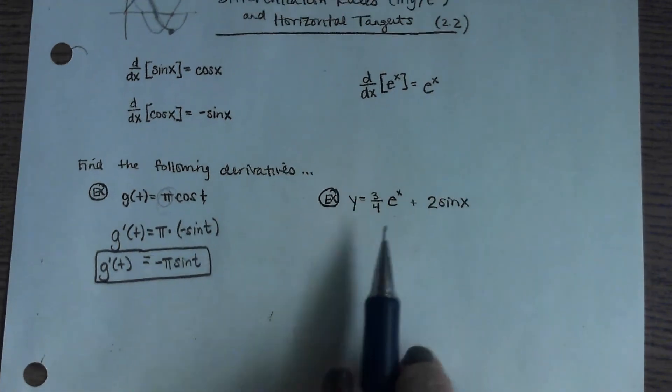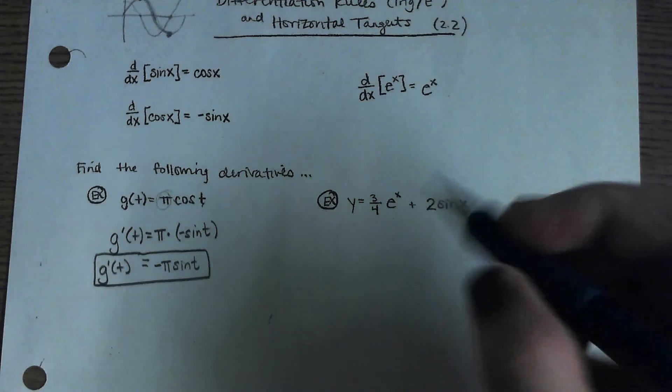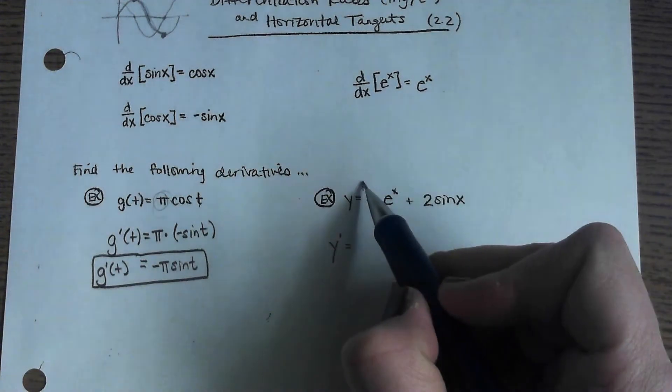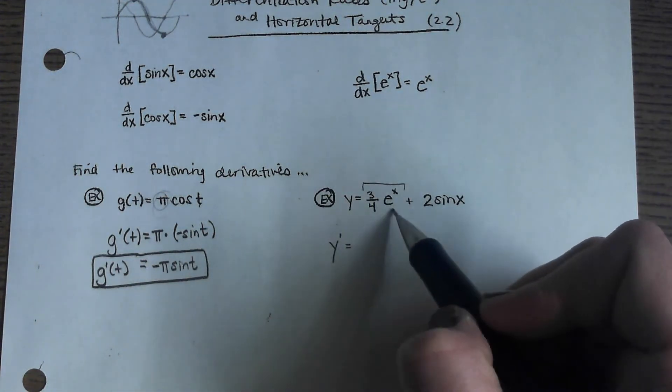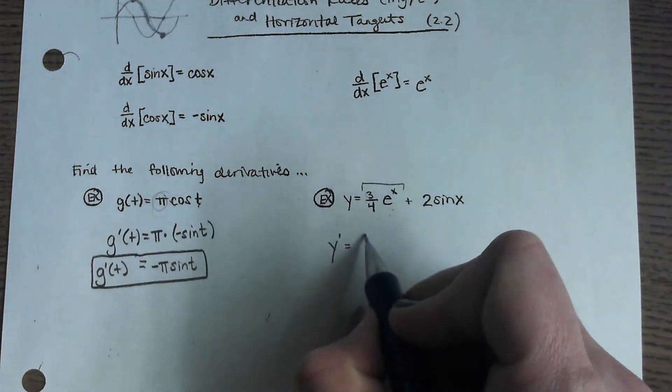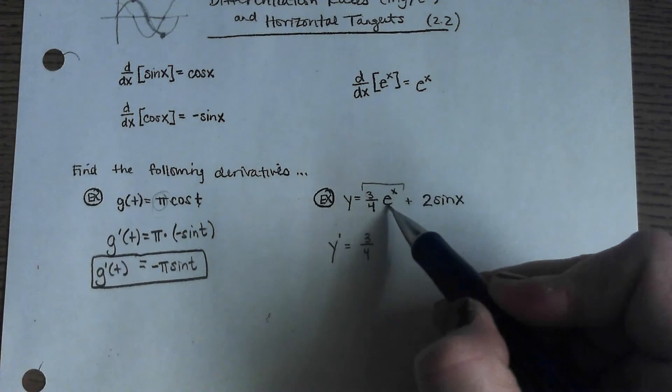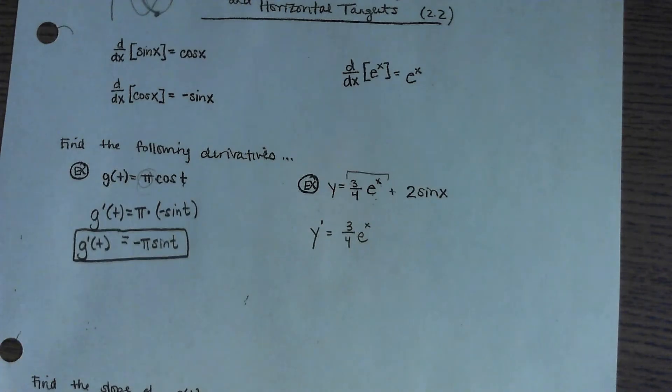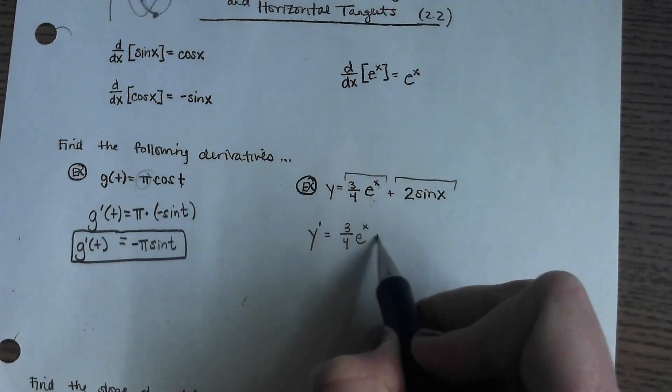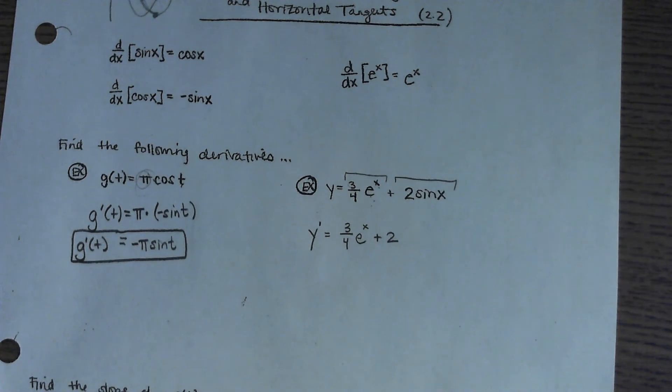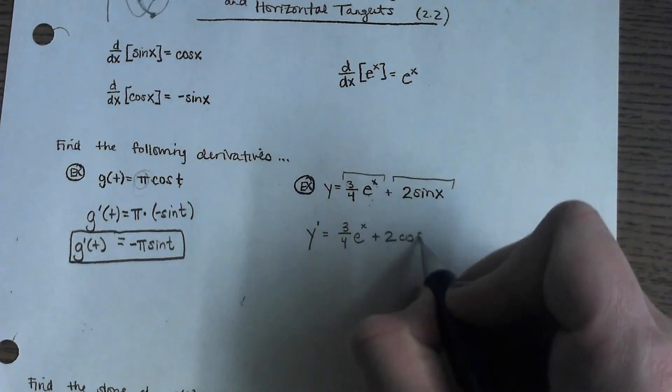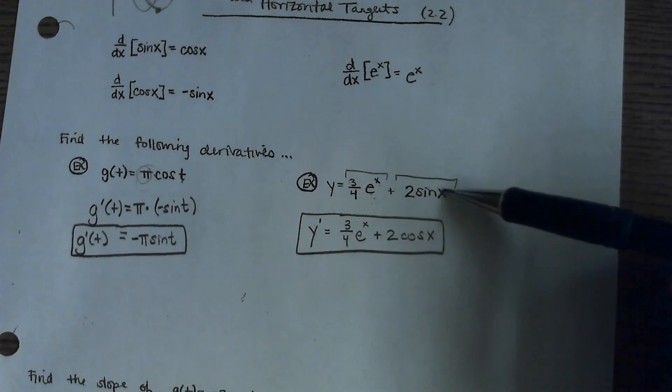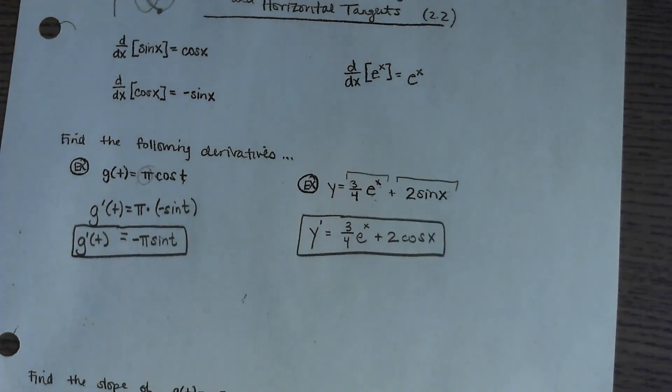On this one, because the notation is y equals, I'm going to use the notation y prime equals. And then there are two parts here. I'm going to find the derivative of the first part. Now, again, three quarters is a constant, so that's just going to stay. And the derivative of e to the x is e to the x. So that doesn't appear to change at all. And then on the two sine x part, the constant can stay right there. But the derivative of sine is cosine. So here's the formula that we would use to find the slope on this function at any given x location.